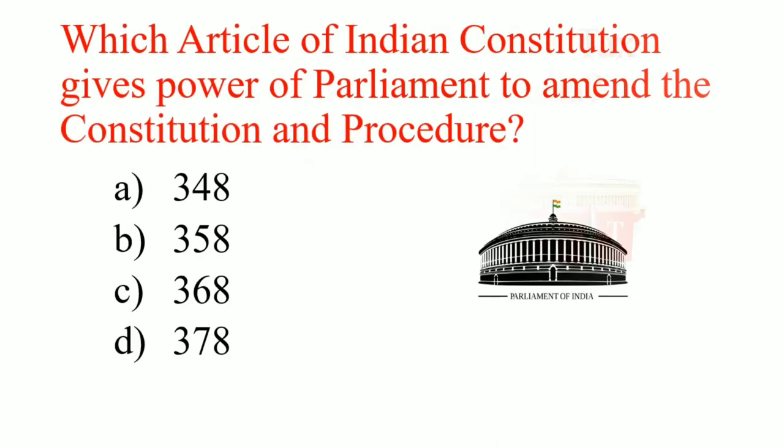Which article of the Indian Constitution gives Parliament the power to amend the Constitution and its procedure? Answer: Article 368.